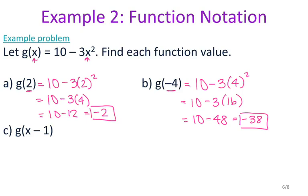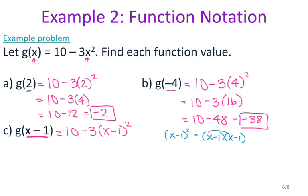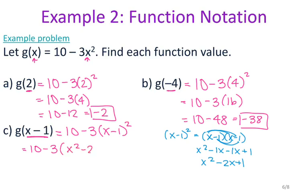Sometimes your input is not a number — sometimes it is an expression, like for letter c where I have x minus 1. I'm going to do the same thing: I have 10 minus 3 times, and where I see that x I'm going to put x minus 1, squared. That x minus 1 squared I'm going to work out on the side: x minus 1 squared equals x minus 1 times another x minus 1, which gives me x squared minus x minus x plus 1, combining like terms to get x squared minus 2x plus 1. So I continue simplifying: 10 minus 3 times the quantity x squared minus 2x plus 1.